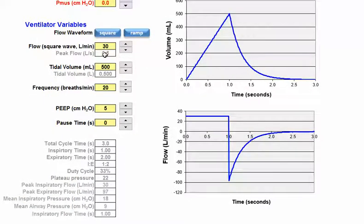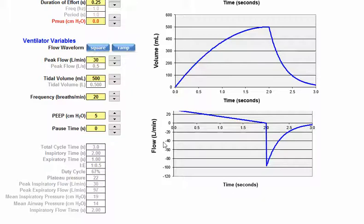So it was double of what it was with my square waveform. So I went back to my square waveform, my flow's at 30, inspiratory time is one second.